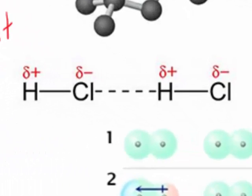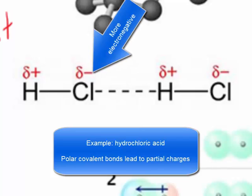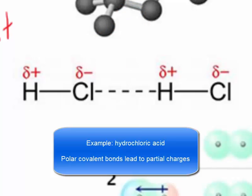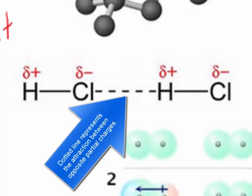A dipole-dipole is an interaction between partial charges. In between hydrogen and chlorine in hydrochloric acid is a polar covalent bond because chlorine is slightly more electronegative than hydrogen. It pulls on the electrons a little more, making it delta minus, which makes the hydrogen delta plus. If you have a bunch of hydrochloric acid molecules in the same beaker, the positive side of one molecule — the hydrogen — is attracted to the negative side, the chlorine side, of another. This dotted line represents the attraction between the partially positive and partially negative sides of two different hydrochloric acid molecules.